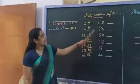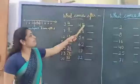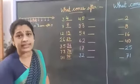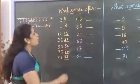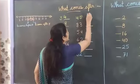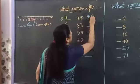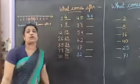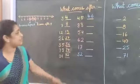And the next number is 45. What comes after 45? 4, 6 — that is 46. You have to write 46 like this.